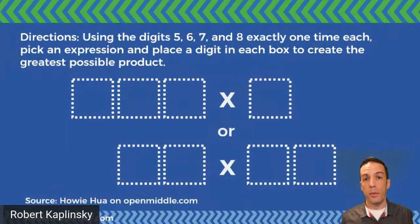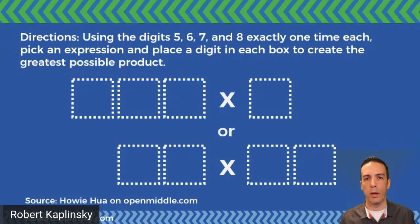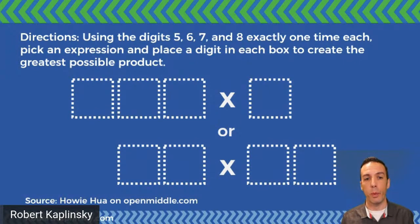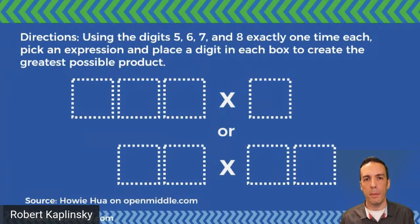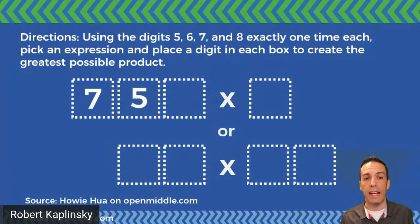Thank you for this opportunity. A really easy way to get a better understanding of what open middle is like is to show you a problem. The problems tend to look like this with boxes and digits that you can place in the box. It says: using the digits five, six, seven, and eight exactly one time each, place a digit in each box to create the greatest possible product. You could have kids who rock multiplication, maybe even have a calculator, but this problem can be really challenging — what if you're just randomly picking numbers blindly out of a bag?